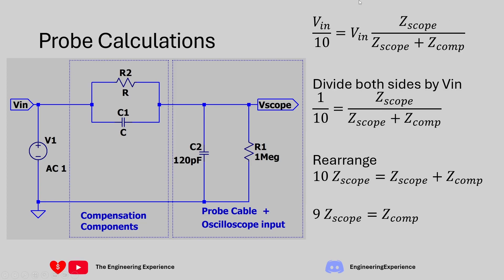Dividing both sides by v_in, the v_in terms cancel, giving 1/10 equals Z_scope divided by (Z_scope plus Z_comp). Rearranging — multiplying both sides by the denominator gives (Z_scope plus Z_comp) divided by 10 equals Z_scope, then multiplying both sides by 10 gives 10·Z_scope equals Z_scope plus Z_comp. Moving Z_scope to the other side gives 9·Z_scope equals Z_comp.